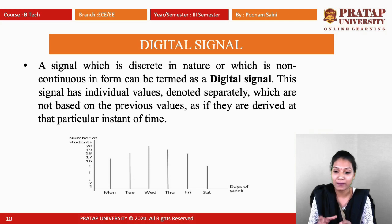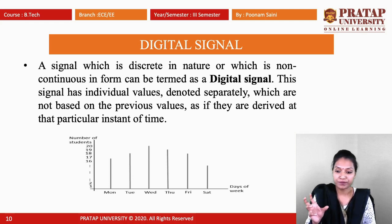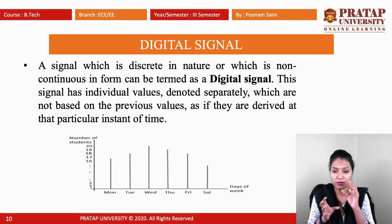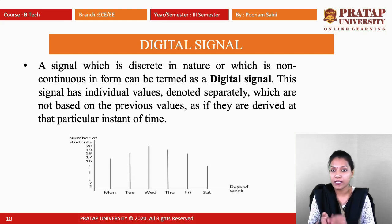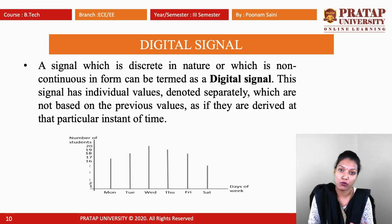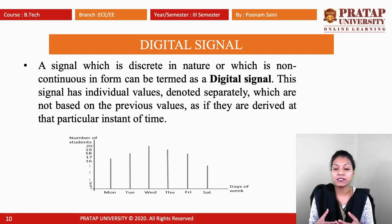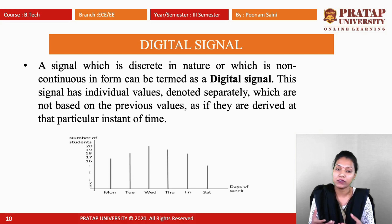For a digital signal, at a particular time there is a different output — for example, the number of students on Monday differs from other days. Between those discrete points, there is no signal. A digital signal is discrete in nature, meaning at one time there is an output, but at other times there is no output. This kind of signal is known as a discrete signal, with individual values denoted separately, not based on previous values but derived at that particular instant of time.